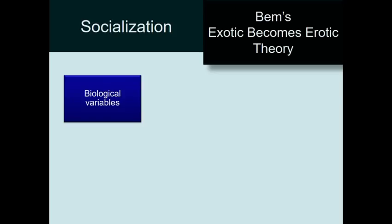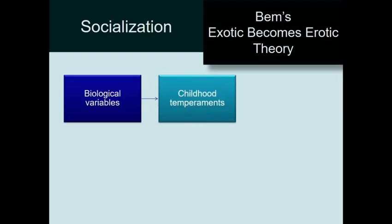Some other theories: many people who are anti-gay argue for socialization, but we really don't have a lot of evidence to support socialization interpretations. A theory called 'Exotic Becomes Erotic,' advanced by David Bem - not related to Sandra Bem who developed the androgyny scale - says that biological variables lead us to have certain temperaments as children. Some kids like quiet activities, some like boisterous activities; some are very reactive to their environment, some are very stable.